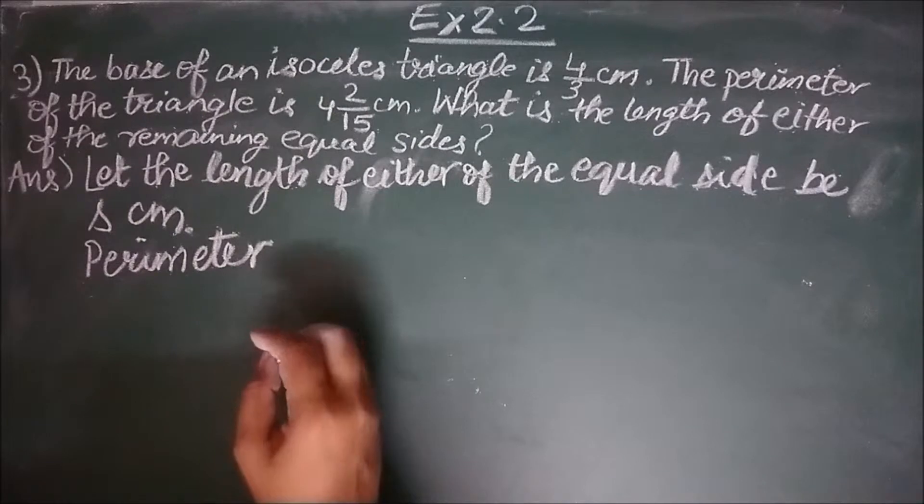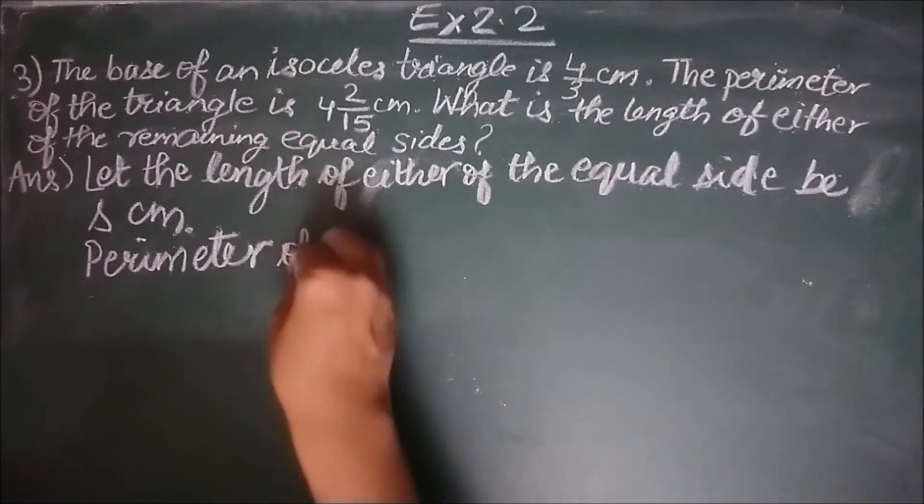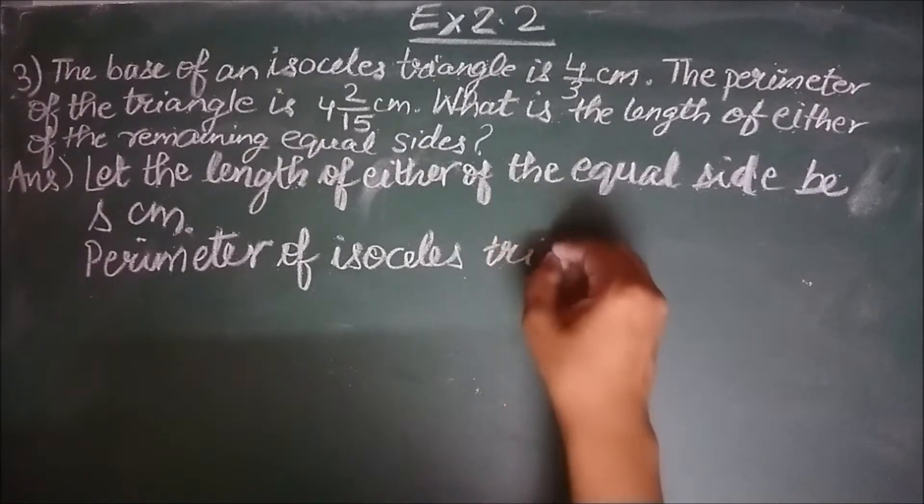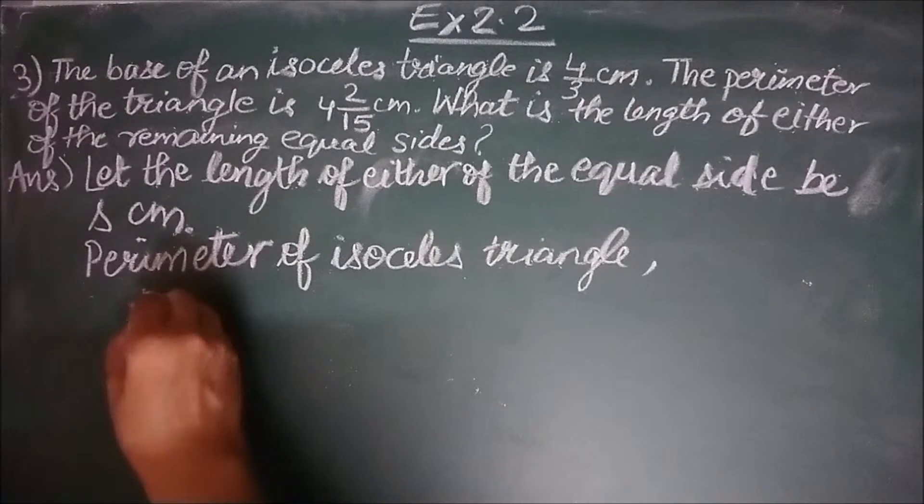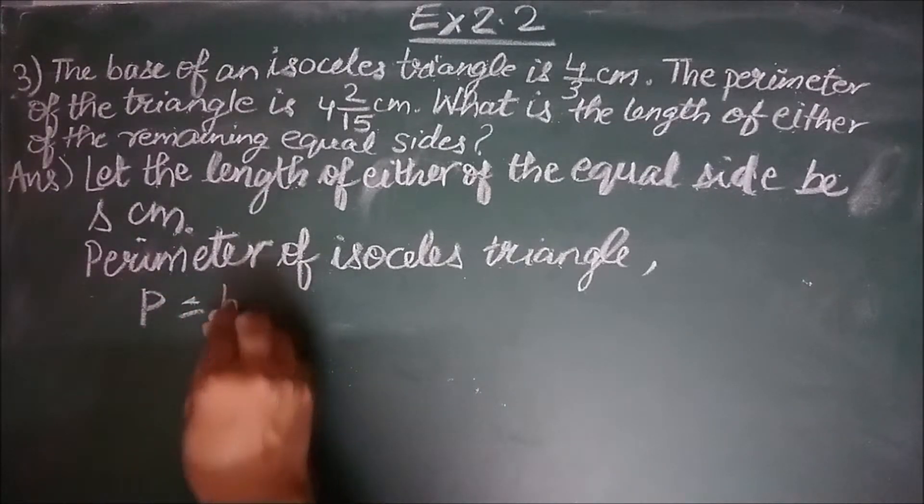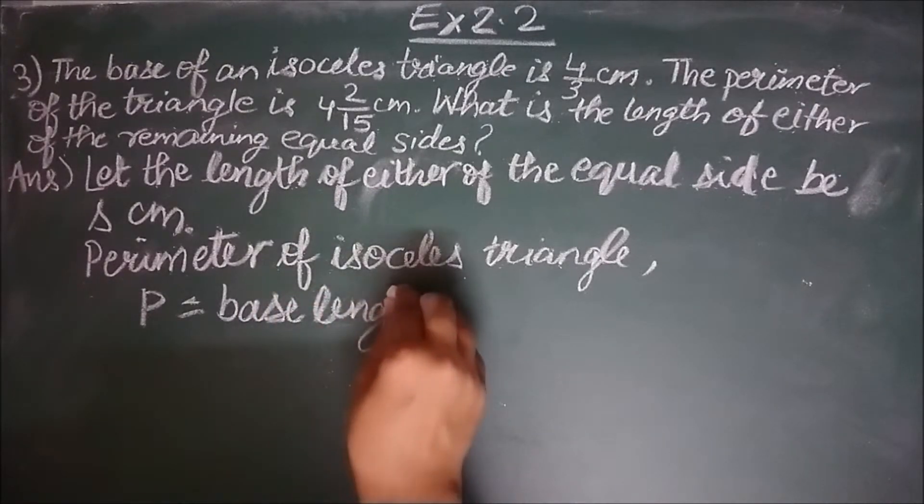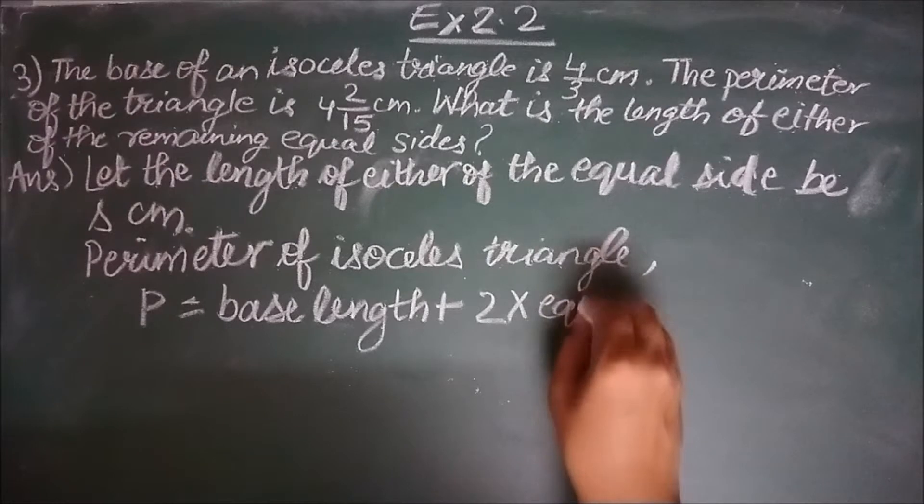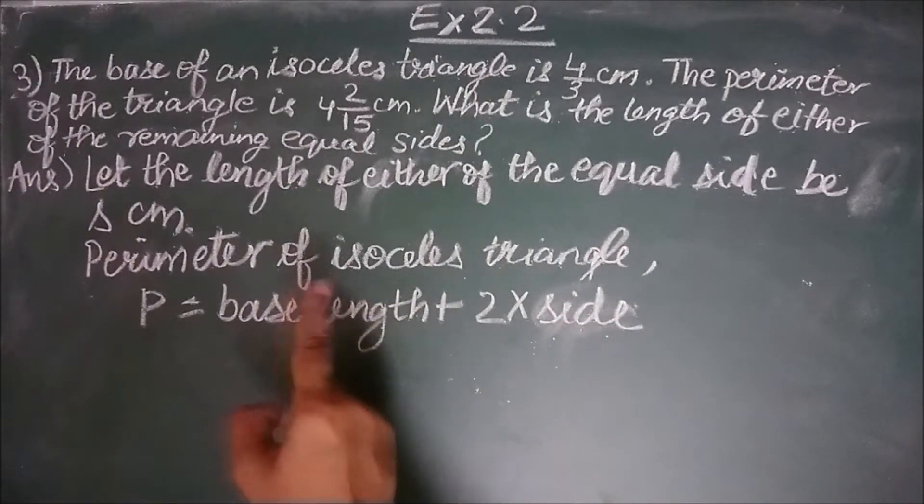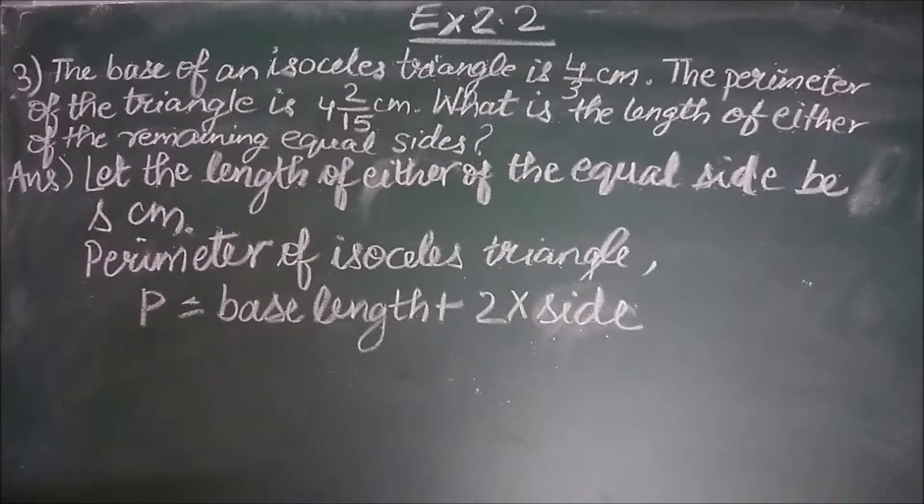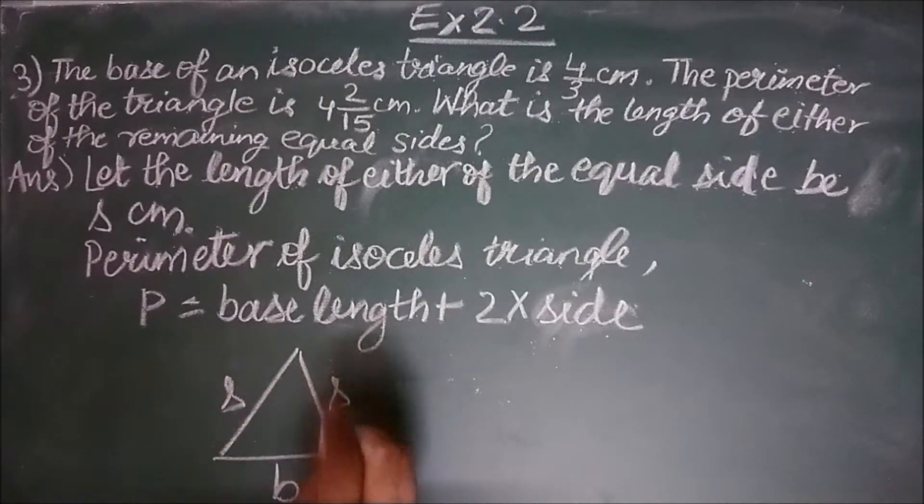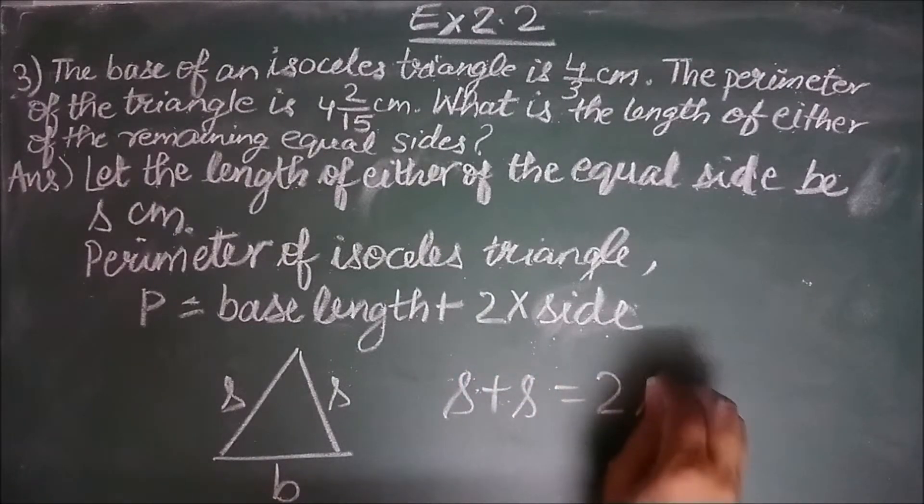The first statement and second as well. Now perimeter of isosceles triangle P will be equal to base length plus twice the length of equal sides, or I would simply write side, because when I talk about side I am always talking about the equal side. So perimeter will be equal to the base length and side plus side, that is twice of side.